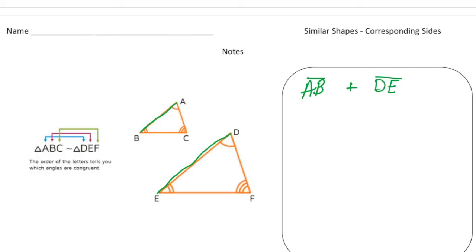Alright, I'm going to use a different color for the next set. So here we have AC, right? And notice that's the first and third letter, which means D and F will correspond with A and C. So we're going to have angle AC, excuse me, side AC, and DF.